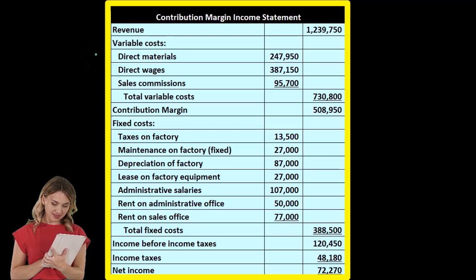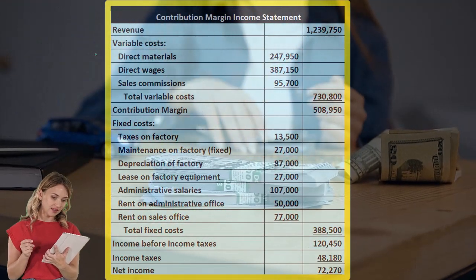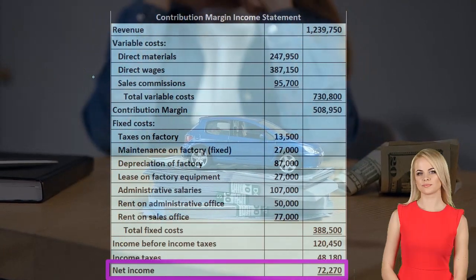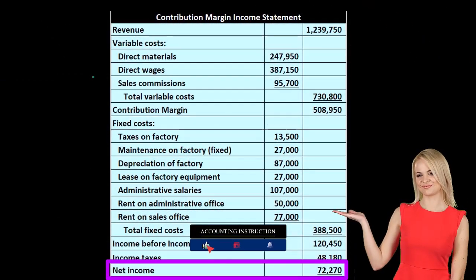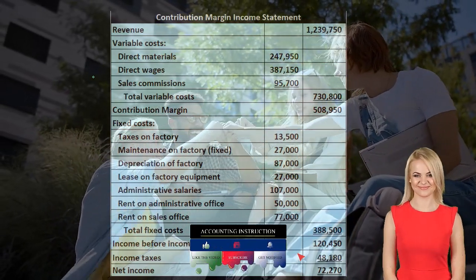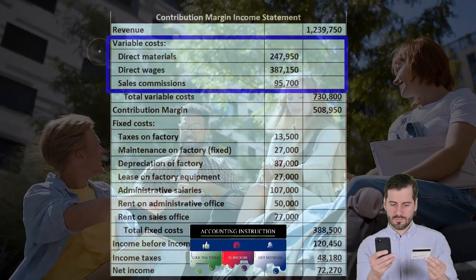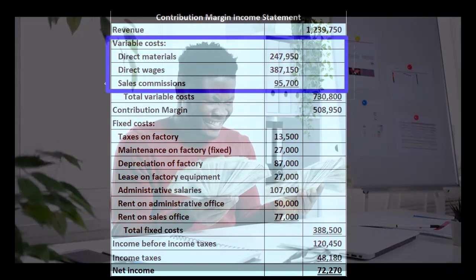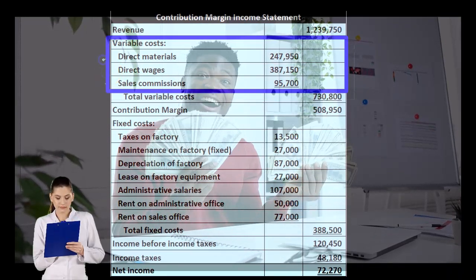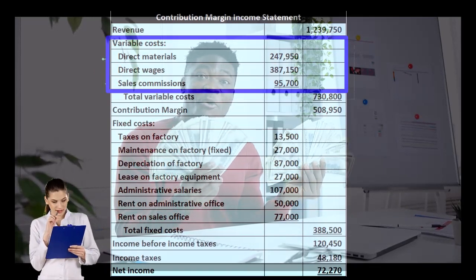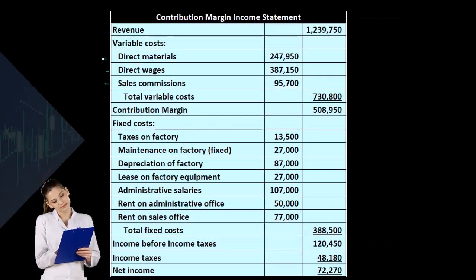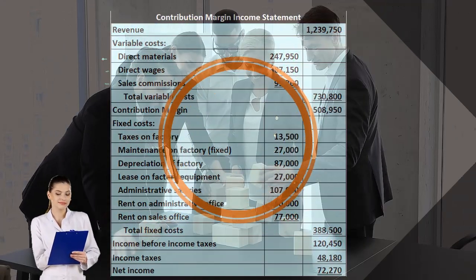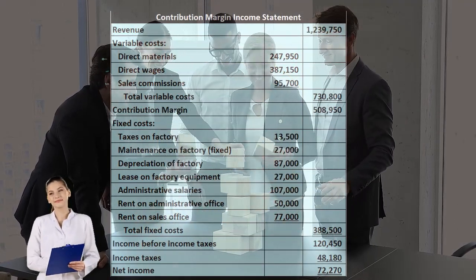We want to convert our normal income statement into a contribution margin income statement. The bottom line — net income — is the same, but we get there differently. Instead of grouping by what expenses do for us, we group by how they behave. Variable costs include direct materials, direct wages, and sales commissions. Notice that sales commission would normally be separate from cost of goods sold on a standard income statement, but in the contribution margin format, we group them together because they behave similarly — and that helps with projections.